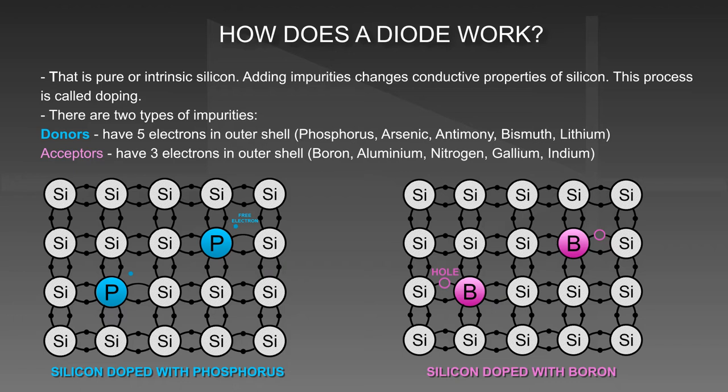Acceptors have three electrons in their outer shell: Boron, Aluminium, Nitrogen, Gallium, Indium.